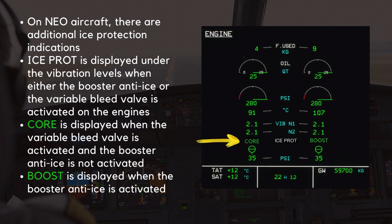On NEO aircraft, there are additional ice protection indications. The message ICE PROT is displayed in white under the vibration levels when either the booster anti-ice or the variable bleed valve is activated on the engines. CORE is displayed in green when the variable bleed valve is activated and the booster anti-ice is not activated. BOOST is displayed in green when the booster anti-ice is activated.